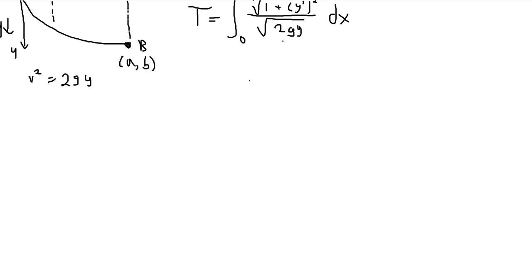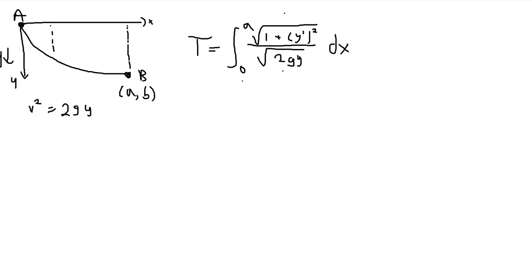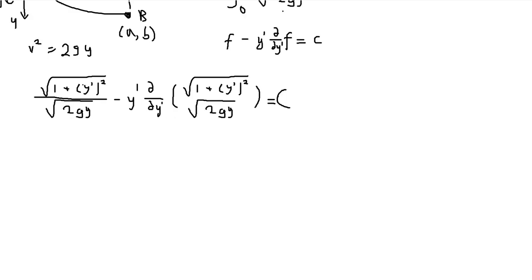So we can use the Euler-Lagrange equation to find y which minimizes this integral. That would be y such that we have f minus y prime times partial of f with respect to y prime is equal to constant. And then if we plug in f, we get this massive equation. Now, when we take the partial with respect to y prime here, this denominator is just a constant in y prime, and we'll see that this entire expression will be over square root of 2gy. But we know that this expression is all over the square root of 2gy.